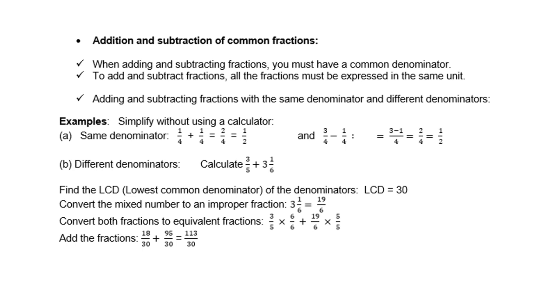Same denominator, like a quarter and a quarter. It is easy. One plus one is two, two quarters. Take note, not four plus four is eight. No, you only add the numerators. The denominators don't change. Same with three quarters minus a quarter. Three minus one is two, two quarters. You don't say four minus four and get zero.